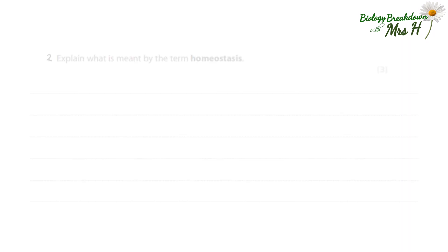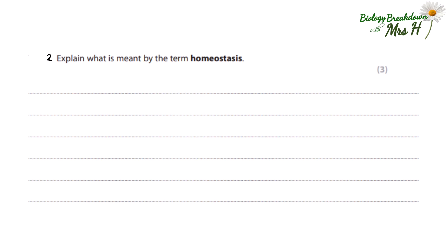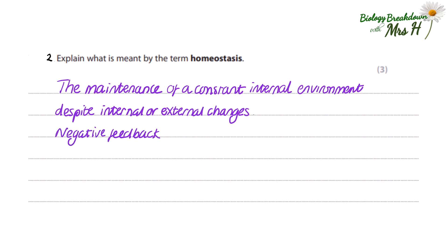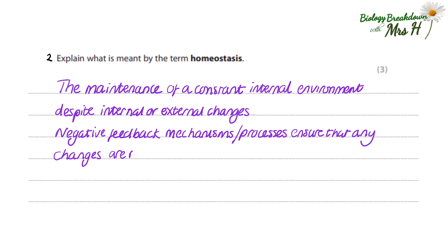Question two: explain what is meant by homeostasis. That is the maintenance of a constant internal environment despite internal or external changes. Negative feedback mechanisms or processes ensure that any changes are reversed back to the optimum or normal conditions.